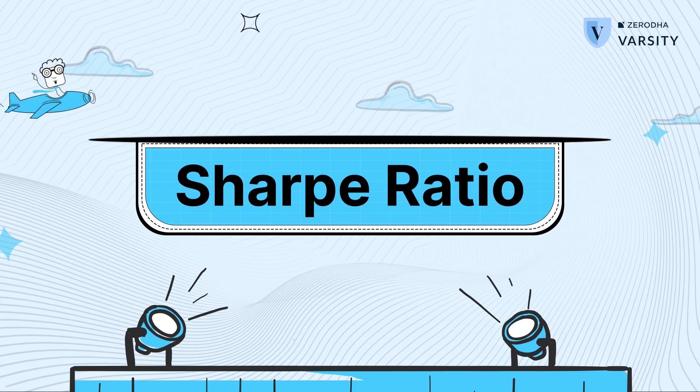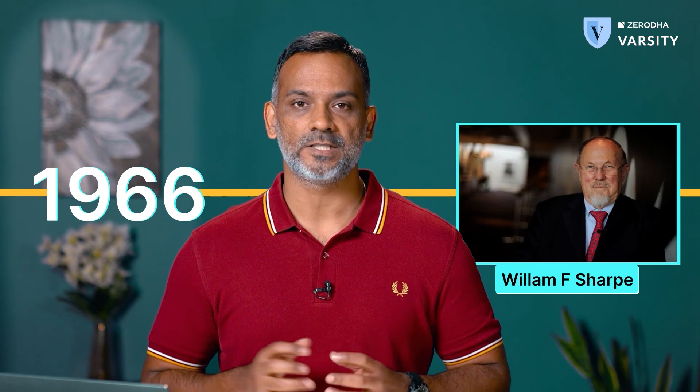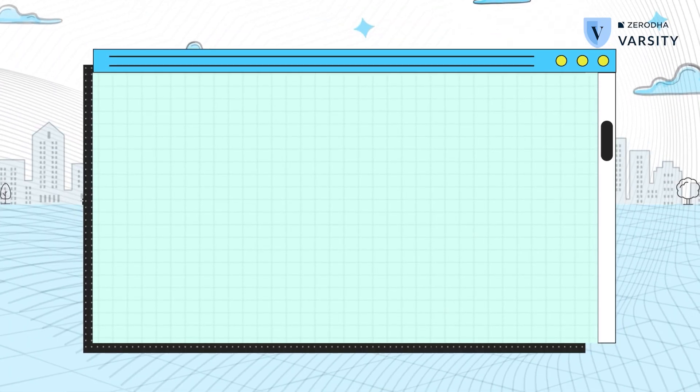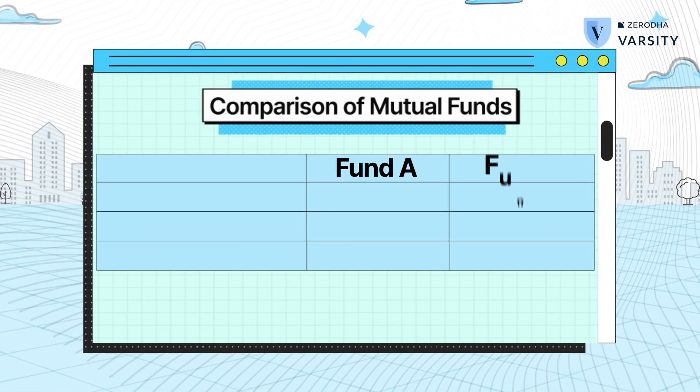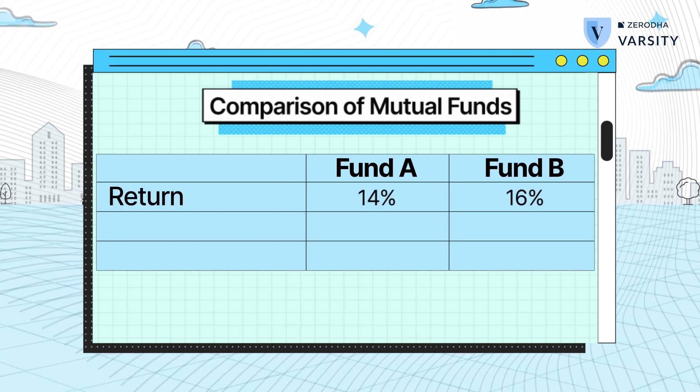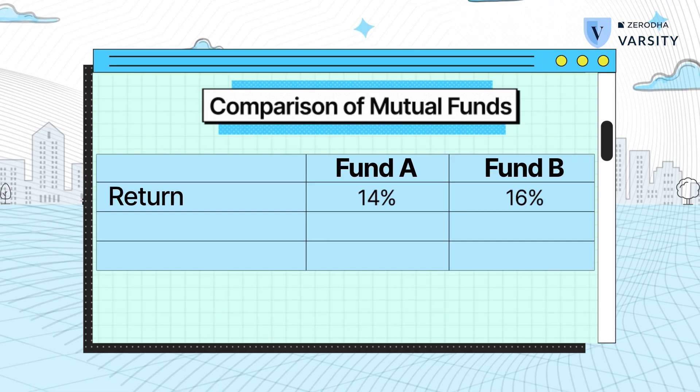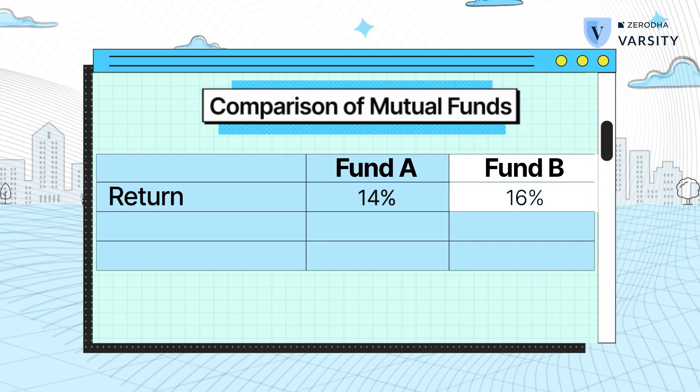Next up is the Sharpe Ratio of a fund. Sharpe Ratio is one of the most sacred formulas in finance. It was invented in the year 1966 by an American economist called William F. Sharpe, who even won the Nobel Prize in 1990 for his work on the capital asset pricing model. Assume there are two large cap funds, Fund A and Fund B, and here is how they performed in terms of returns. Which of these two funds do you think has performed better? Well, it's a no-brainer — Fund B has delivered higher returns, therefore Fund B is a better choice here.